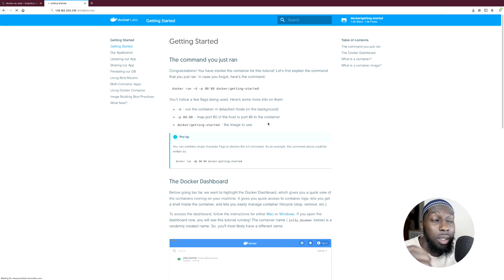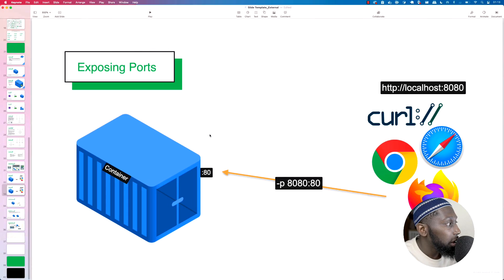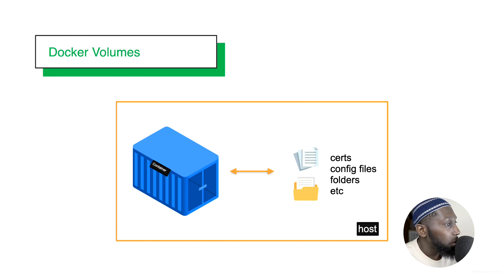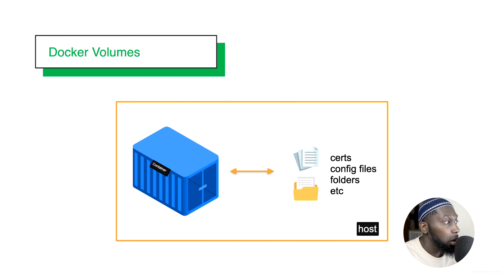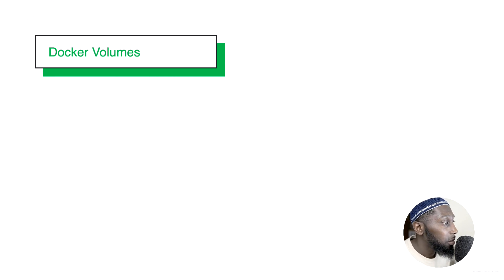So there we have it — now you know how to work with containers: stopping and exposing ports. Now let me quickly teach you about volumes. Volumes is a way of mapping content or folders from the host to the container. The container doesn't have direct access to the host, so if you want to share files, config files, folders, etc., you use volumes.